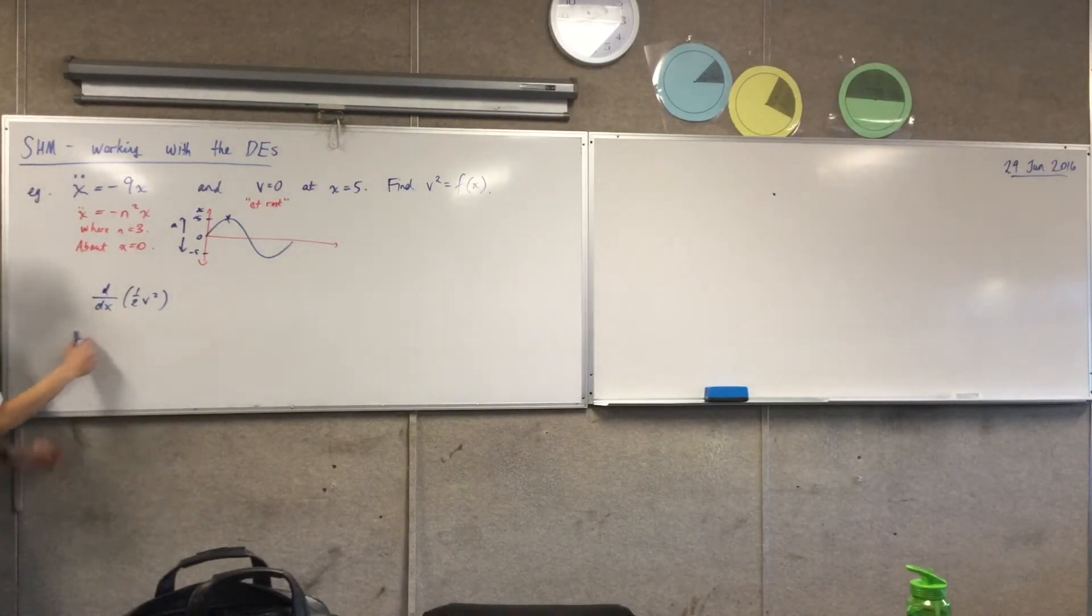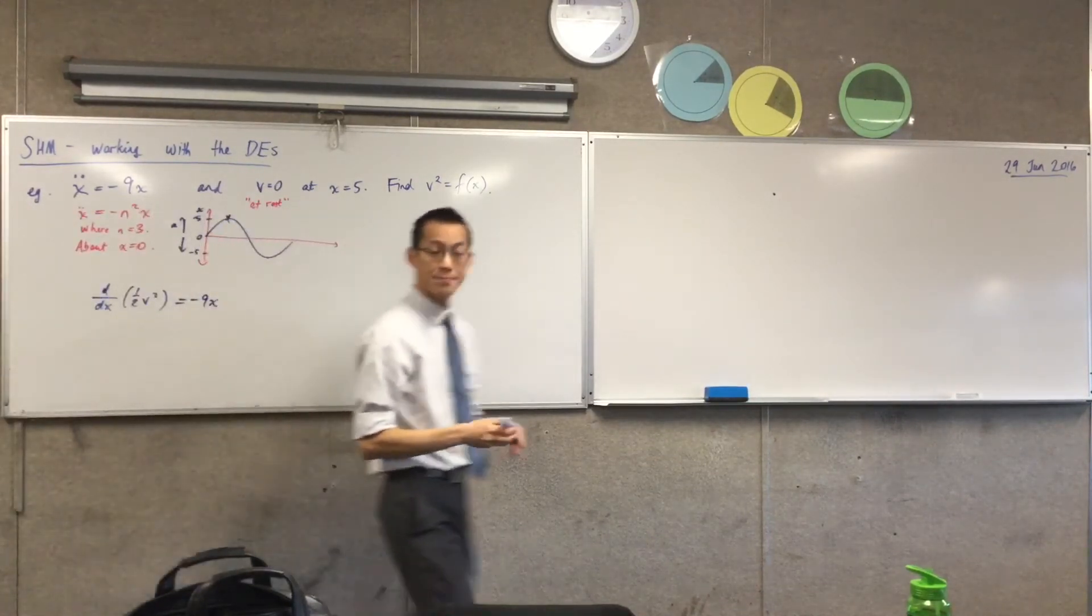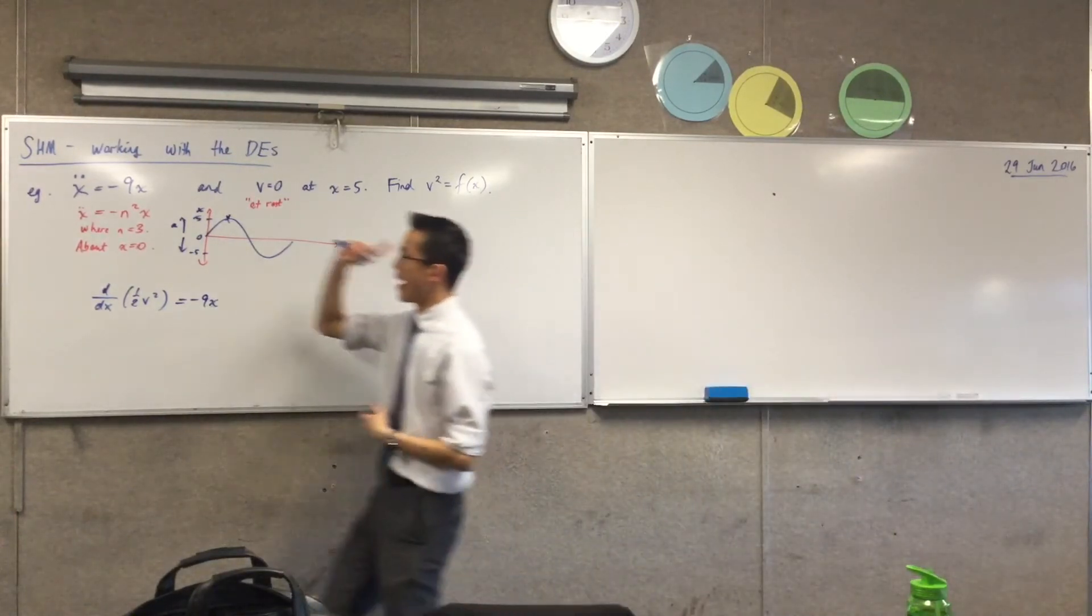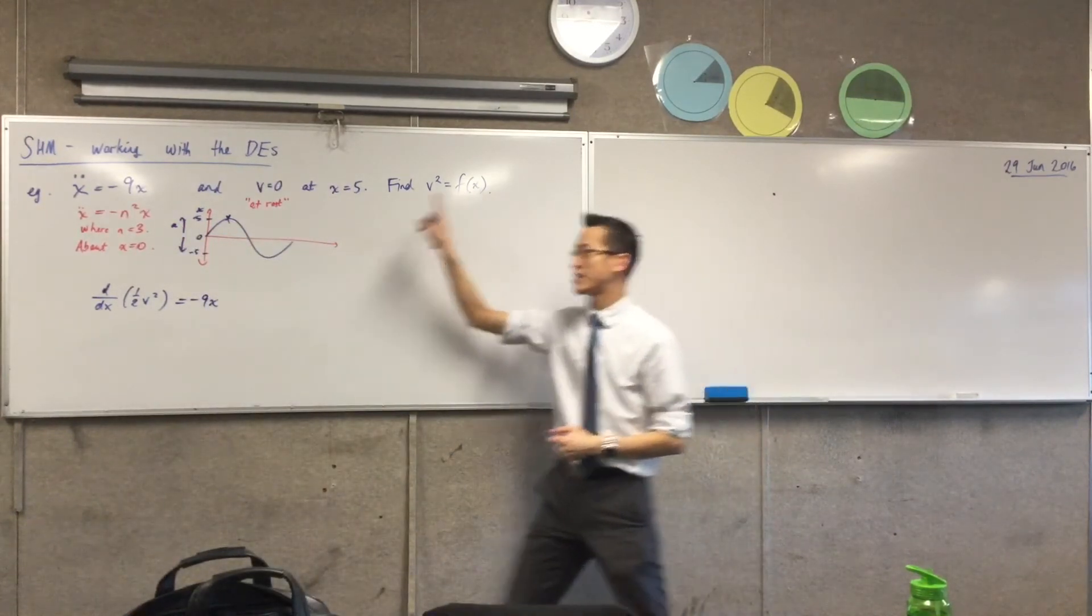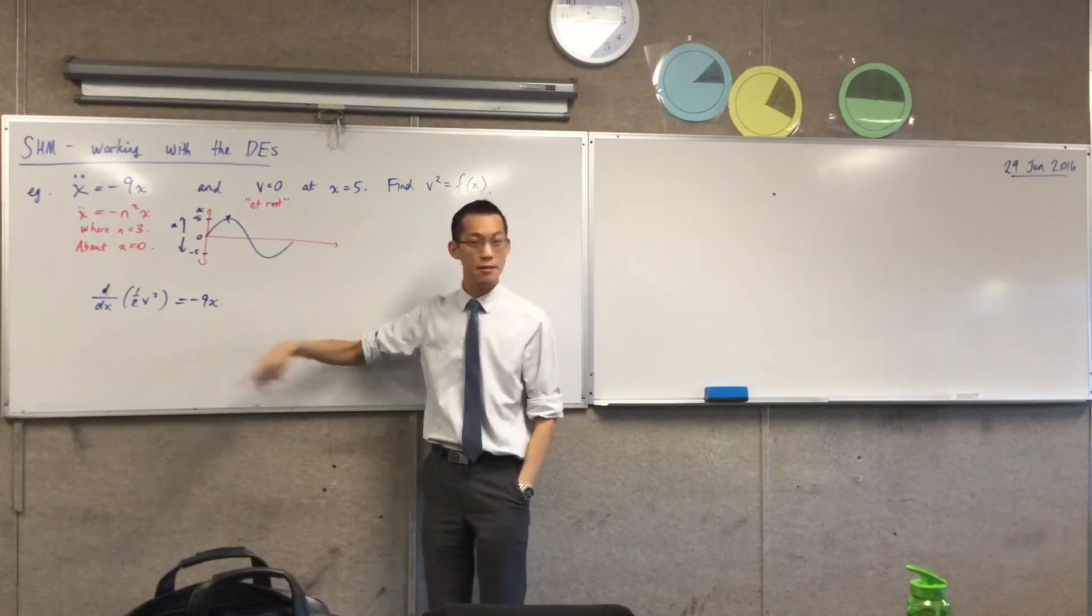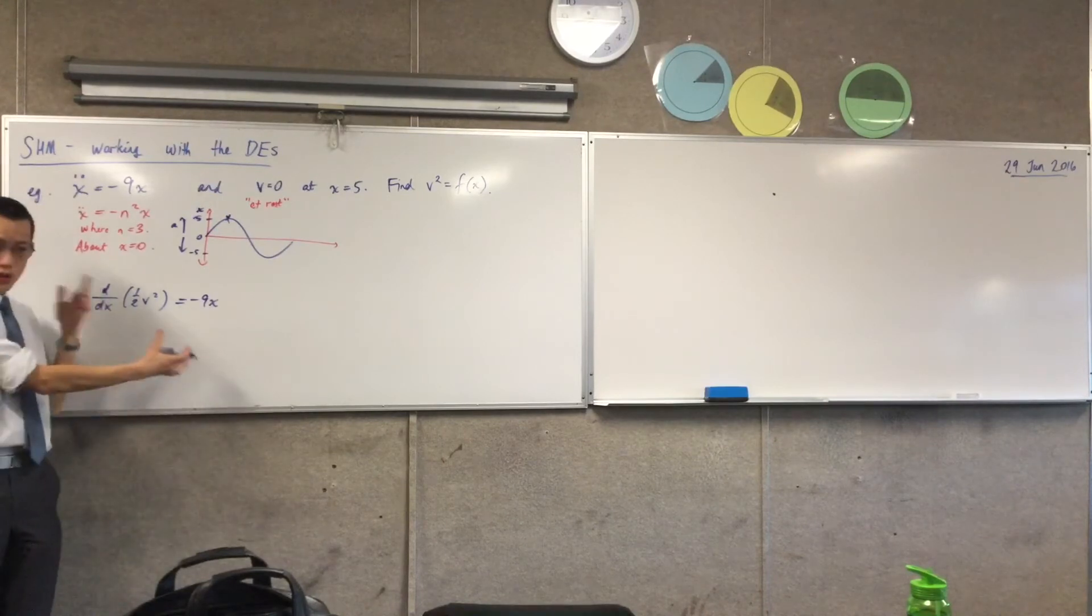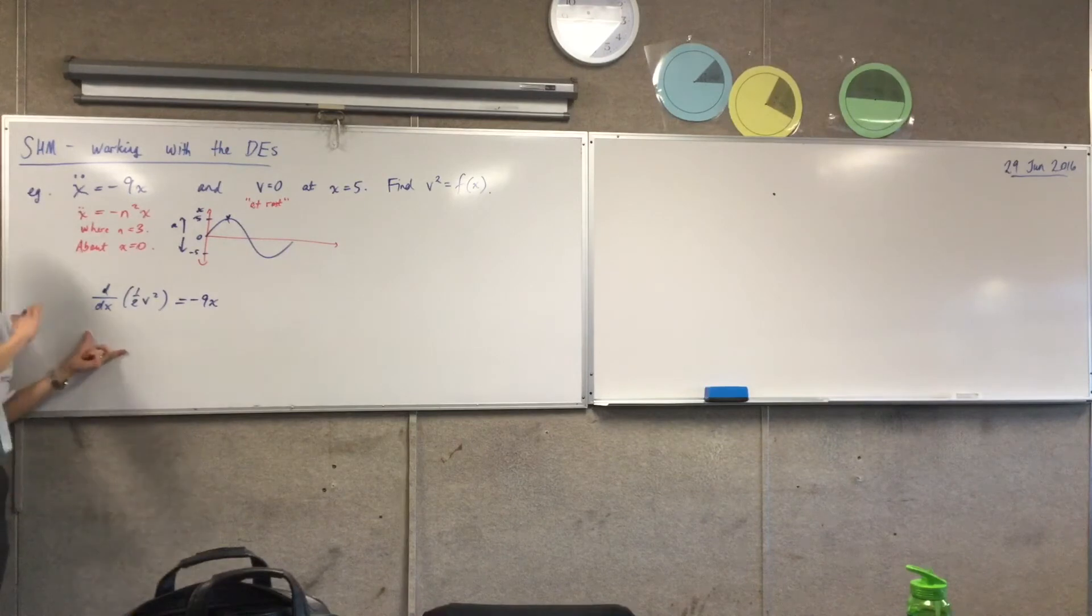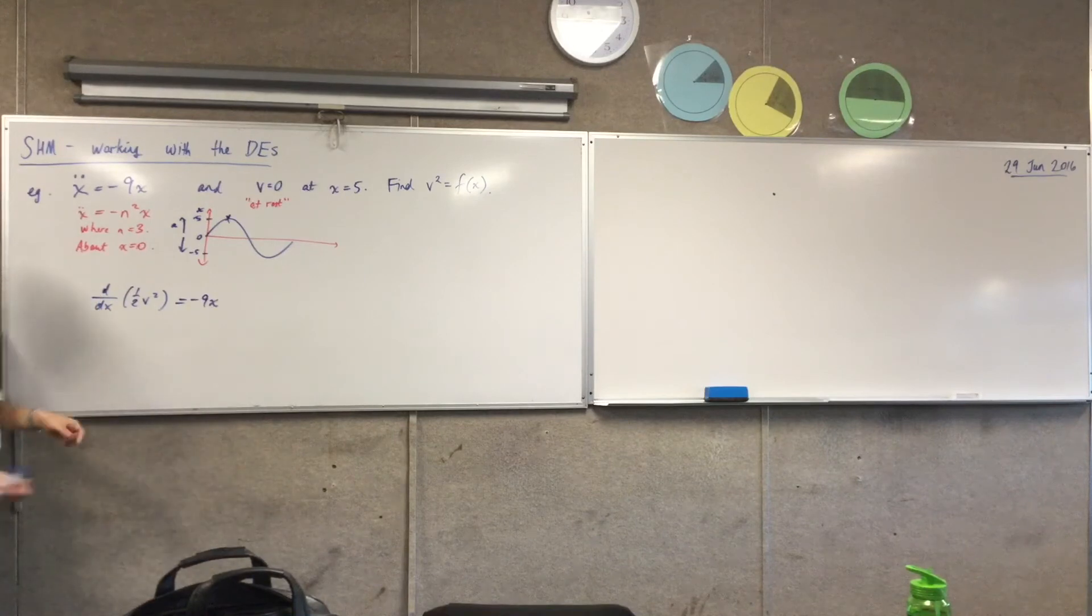So this is acceleration, which I've been given in the question as minus, or negative, 9x. Alright, so based on how I've been given information about the motion, and where I'm trying to go, I decide this is my best starting point. What would you like me to do now? Integrate. Okay, let's integrate with respect to x. I'm going to encourage you as much as possible, when you're describing what you're doing to a friend or to yourself, now we know you integrate with respect to a variety of things. So don't just say integrate. Tell me what you're integrating with respect to. And it's x in this case.